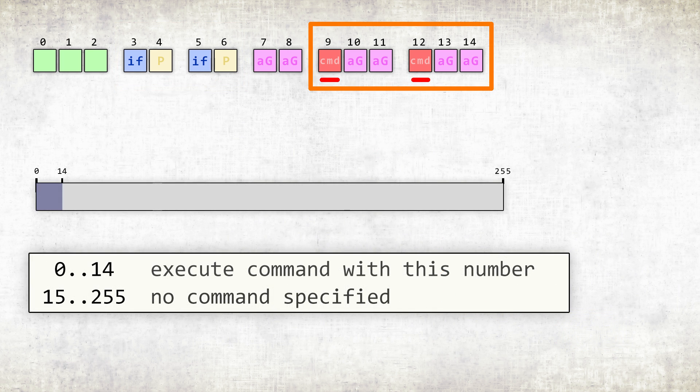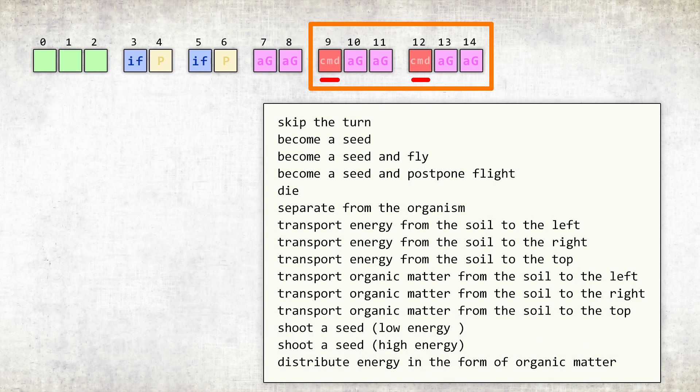The numbers I've painted red encode commands. If the ninth or twelfth number has a value in the range from zero to 14, we need to evoke one of 15 commands.